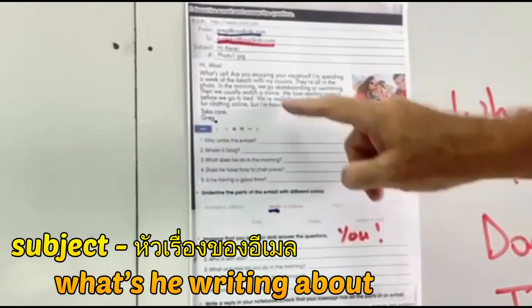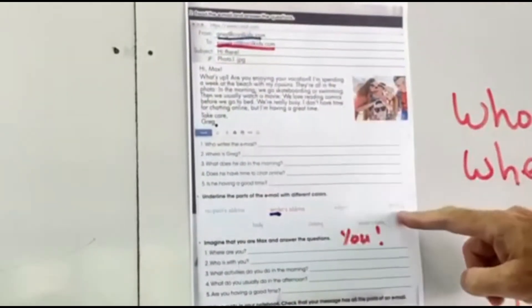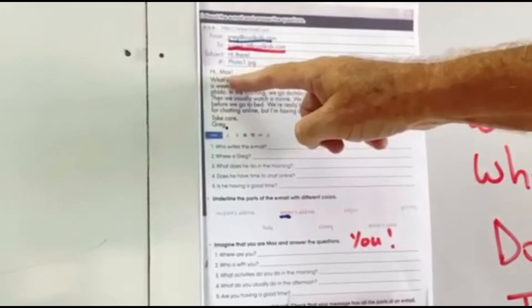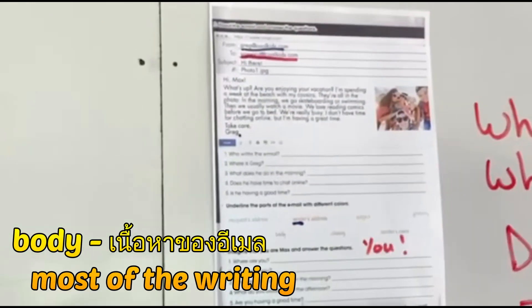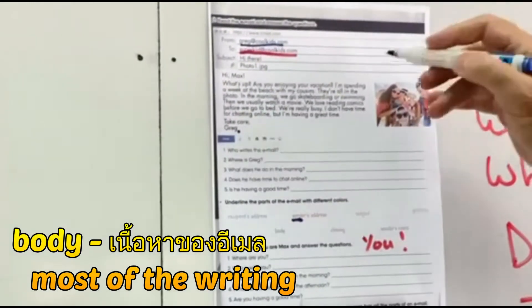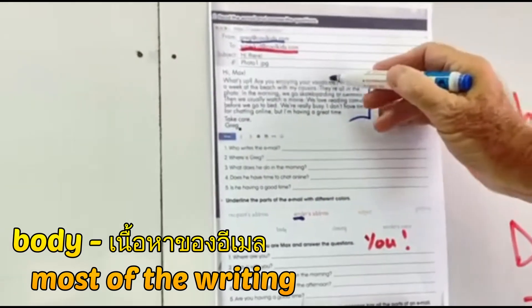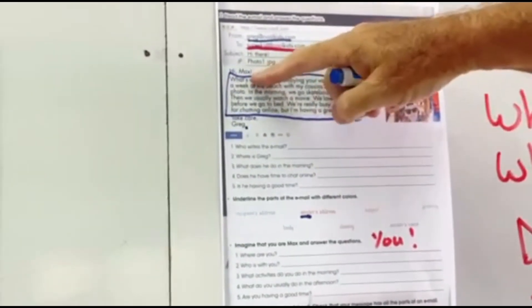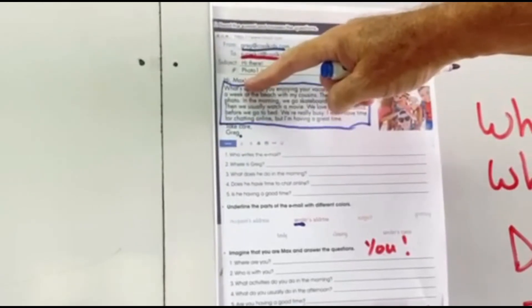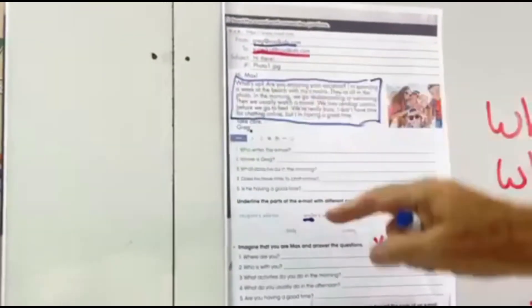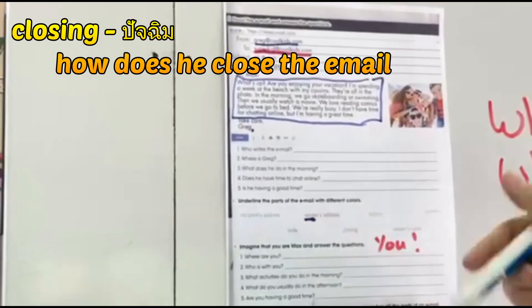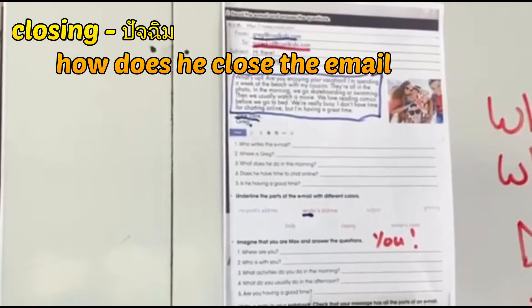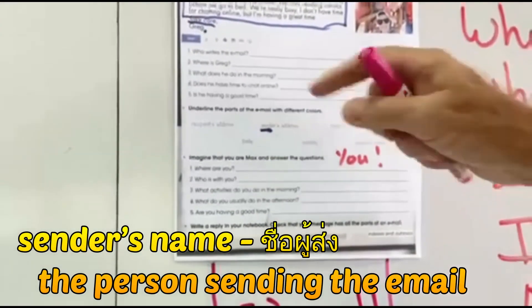Subject. What's he writing about? There it is, there's the subject. The greeting. How does he start his message? The body. The body means most of the writing, so that's the body there. Okay, so there's the start, there's the greeting, there's the body, then closing. How does he close? He doesn't say goodbye, he says take care. And the last one, the sender's name. The person who's sending it, there he is, Greg.